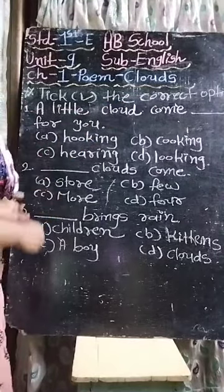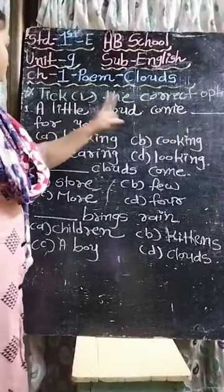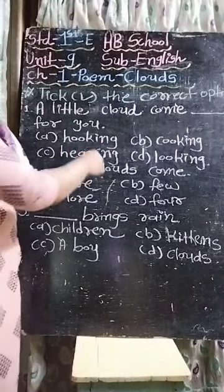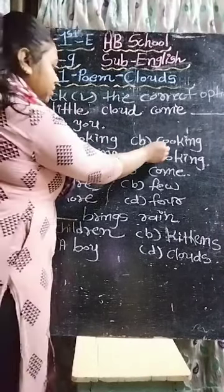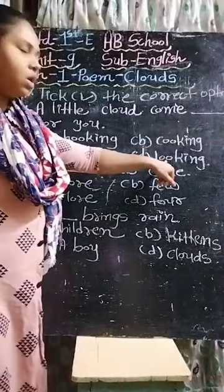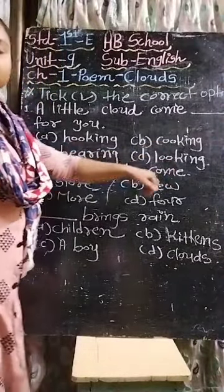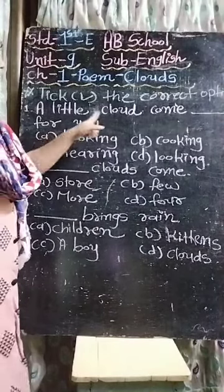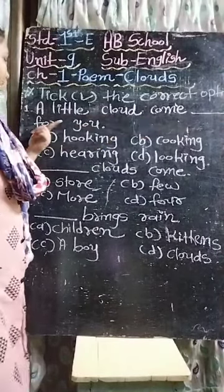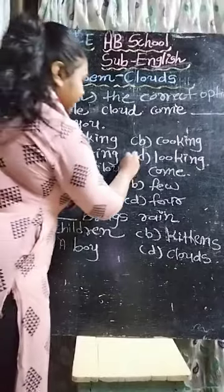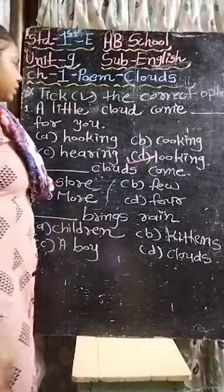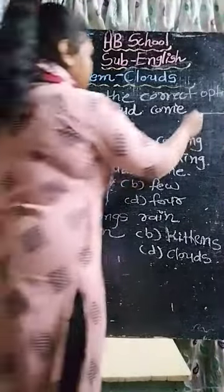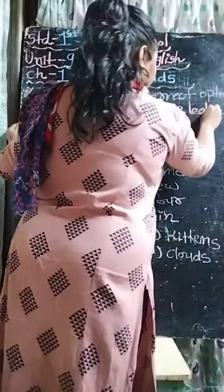See the first one: 'A little cloud come ___ for you.' Options are: cooking, cooking, hearing, or looking. Little cloud कैसे आ रहा है - come dash for you. The answer is 'looking.' A little cloud come looking for you.